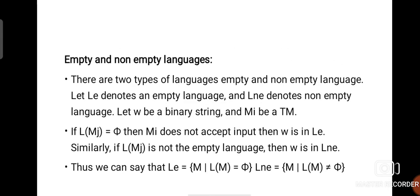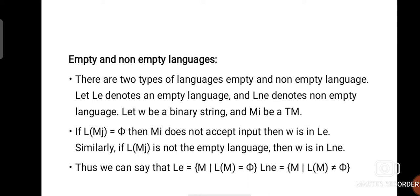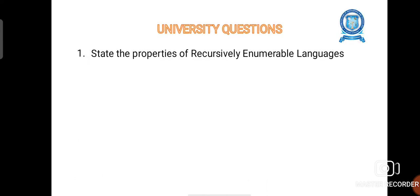Now we can see one more property: empty and non-empty languages. There are two types of languages — empty and non-empty. Let LE denote the empty language and LNE denote the non-empty language. Let W be a binary string and MI be our Turing machine. If L(MJ) — the language of the Turing machine — is equal to the empty set, then MI does not accept any input, and W is in LE. Similarly, if L(MJ) is not the empty language, then W will be in LNE. Thus, LE equals the language of the Turing machine which equals the empty set, and LNE equals the language of the Turing machine which is not equal to the empty set. A possible university question is: state the properties of recursively enumerable languages.